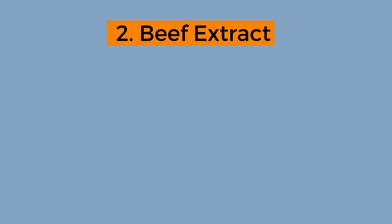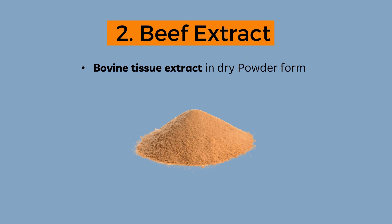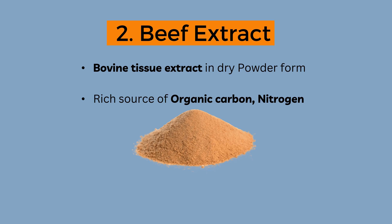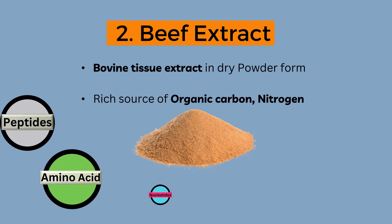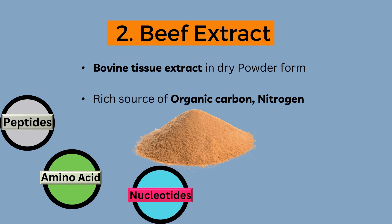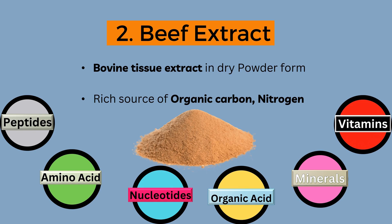The second ingredient in nutrient agar is beef extract. Beef extract is a bovine tissue extract in dry powder form. It is a rich source of organic carbon and nitrogen. Beef extract provides a mixture of different nutrients such as peptides, amino acids, nucleotides, organic acids, minerals and vitamins.